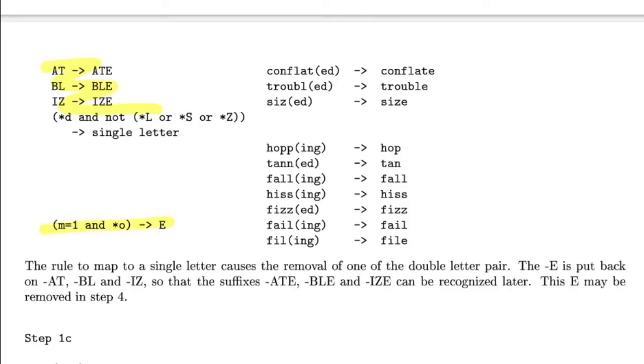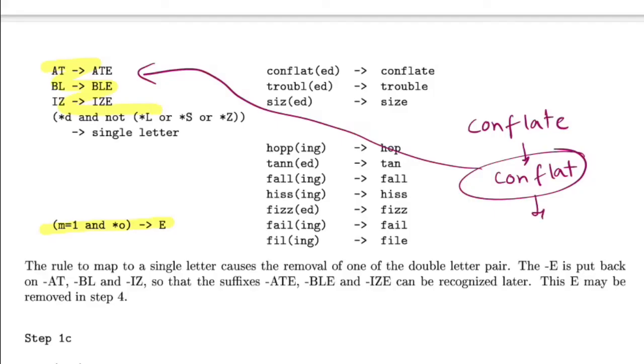Then you apply all these set of rules—correction rules. If you notice, if the original word is conflate, from the previous step you would be getting something like conflat. This goes and follows the first rule, converting it back to conflate. Similarly, for conflated, from the previous step you'd be getting conflat, and then you match from this and get conflate.